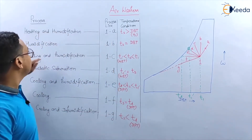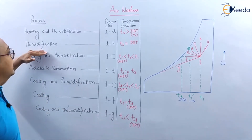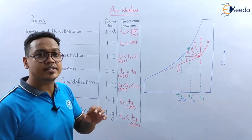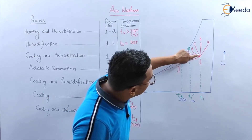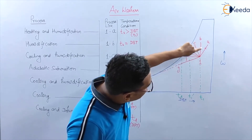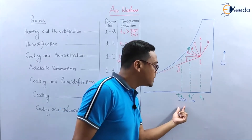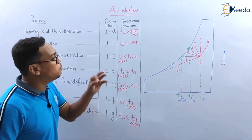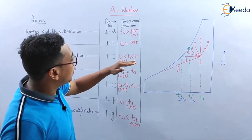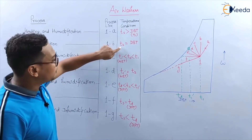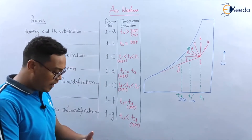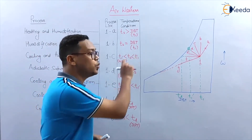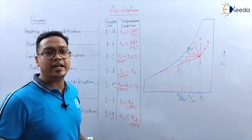Now let's see the second process: humidification. Humidification occurs at constant dry bulb temperature — process 1 to B. At constant temperature, only moisture will increase in the air. The condition for this case is that the surface temperature of water should be equal to the dry bulb temperature T1 of the inlet air.